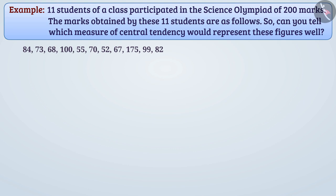A measure that represents the entire set of data with a single value is called a measure of central tendency. We know mean, median, and mode are measurements of central tendency. To find the representative value of the data shown, we will find the value of each measure of central tendency.